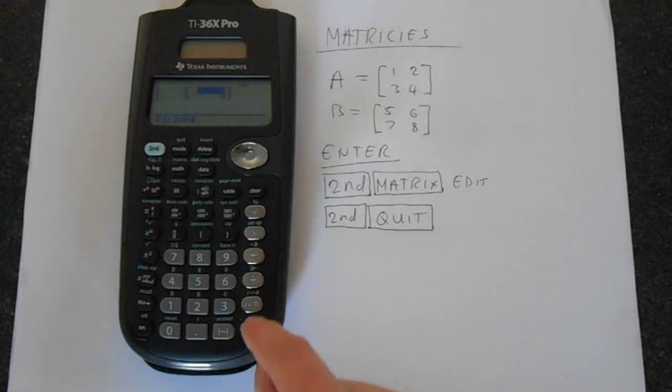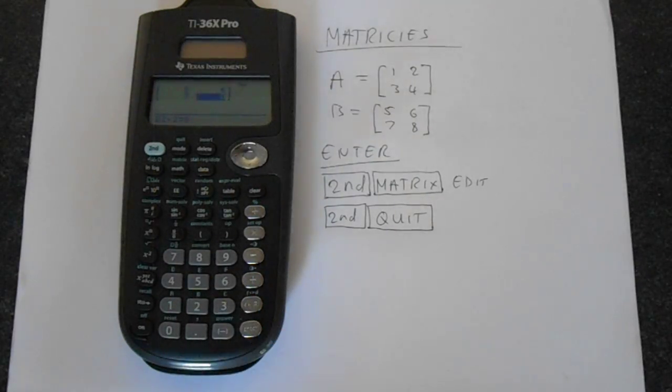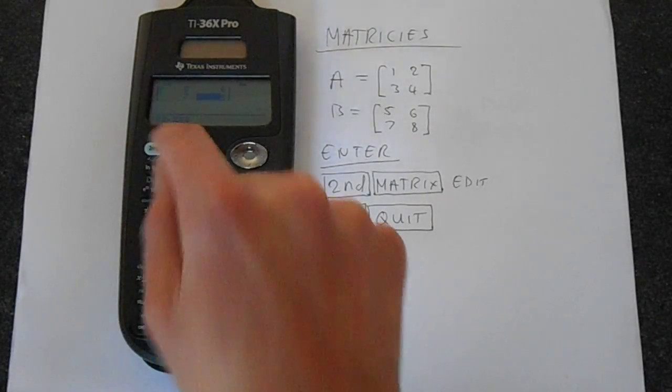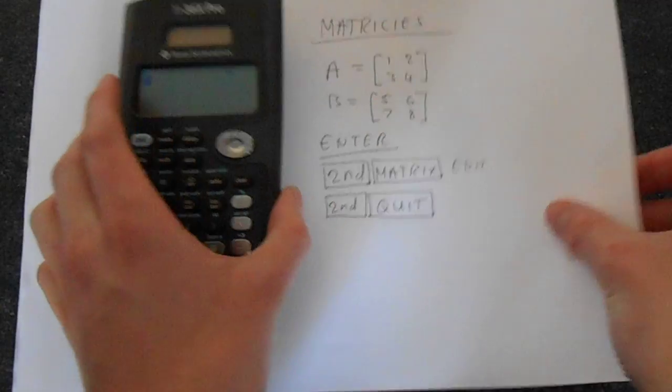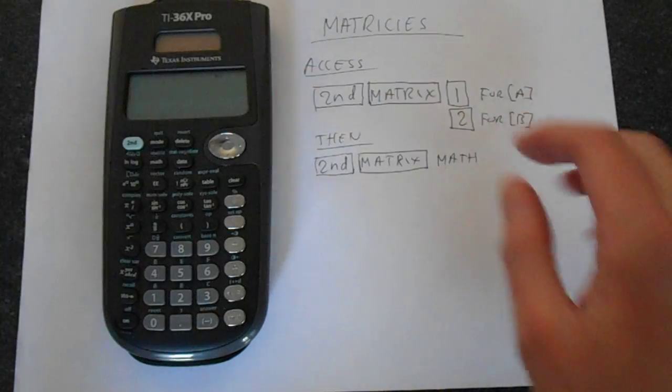And then this takes you to matrix B which we're making 5, 6, 7, 8 and then we quit this once more. Now let's see what we can actually do with the two matrices.